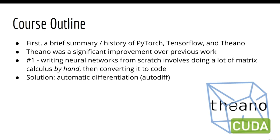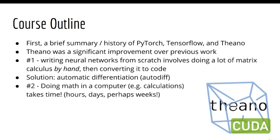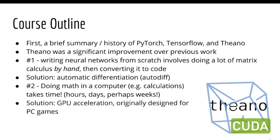And number two, there's a lot of math that has to happen in a neural network and this takes a lot of time, meaning you'd have to wait hours or even days or weeks to train your neural network. The Theano library was the first to innovate in this area by making use of GPUs, which were originally designed to improve the performance of PC games.